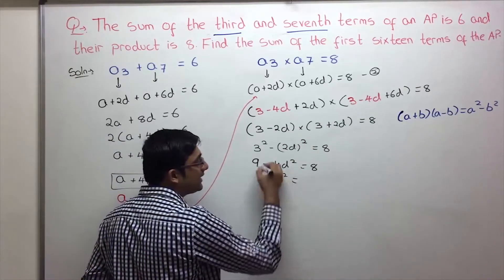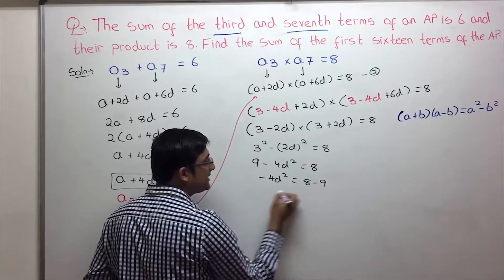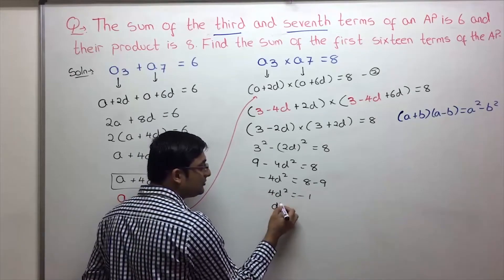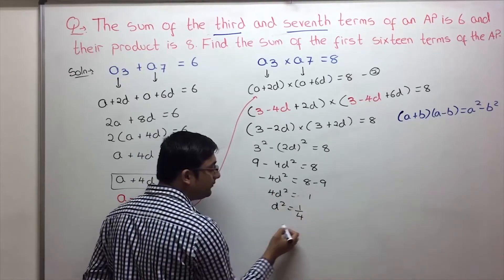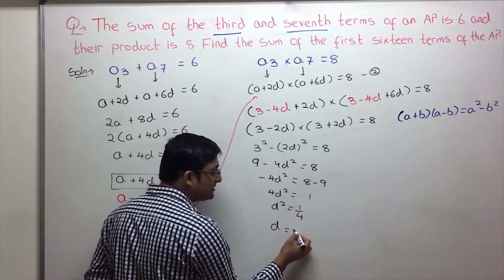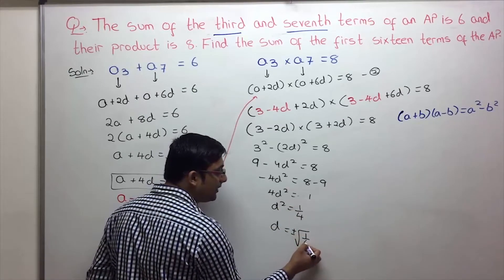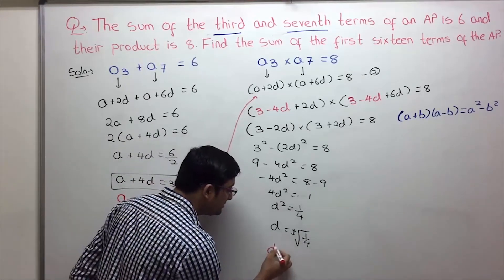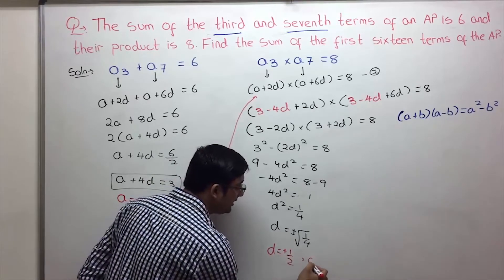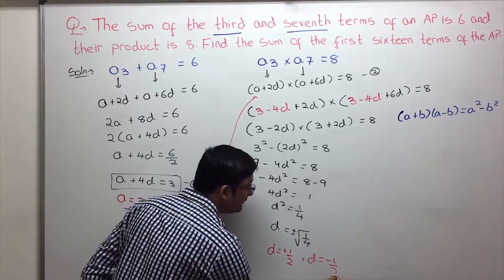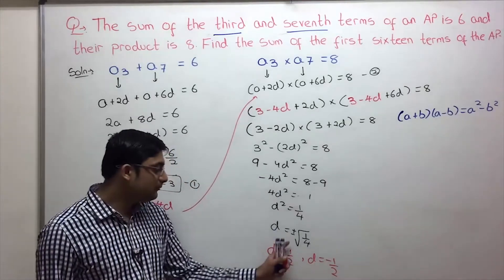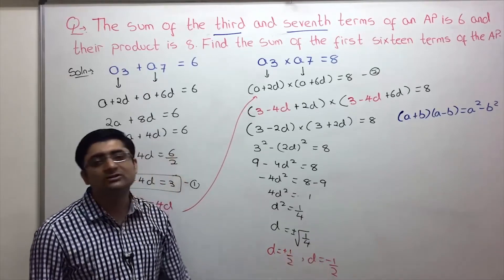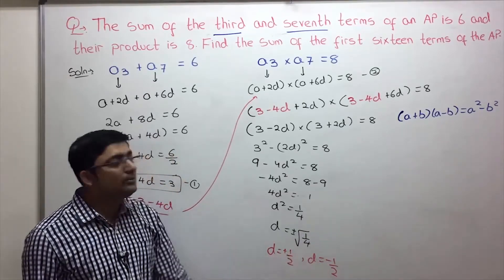From 9 minus 4D squared equals 8, we get minus 4D squared equals minus 1, so D squared equals 1 by 4. Taking the square root, D equals plus or minus square root of 1 by 4. Since plus half squared and minus half squared both give 1 by 4, we have two possible values: D equals plus half and D equals minus half.